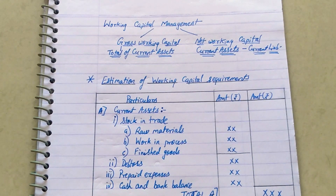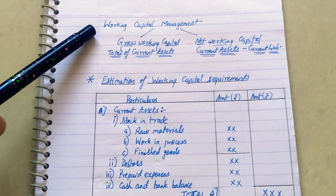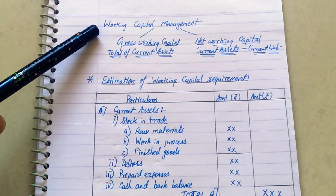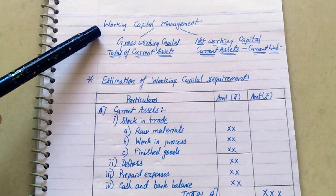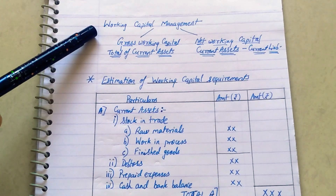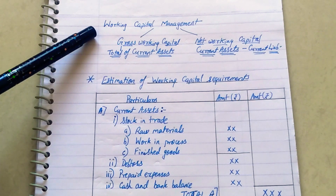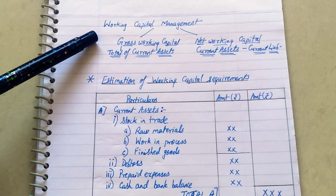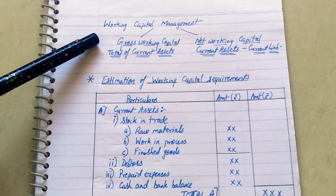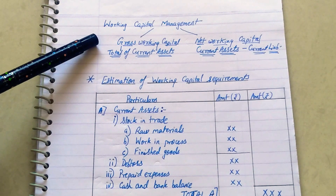Hello dear students, today in this video lecture we are going to study about working capital management. When we say working capital management, we are mainly concerned with current assets and current liabilities. Current assets are all those assets that can be easily converted into cash within a period of one year or less, and current liabilities are liabilities which are to be paid within a period of one year.